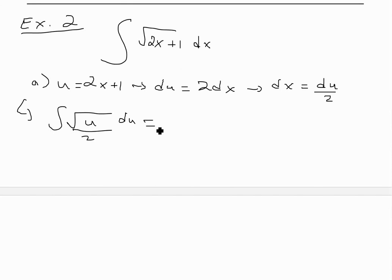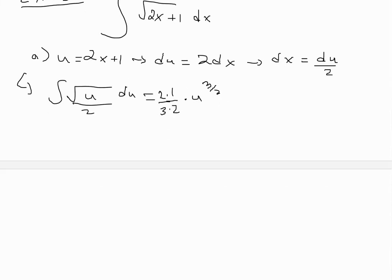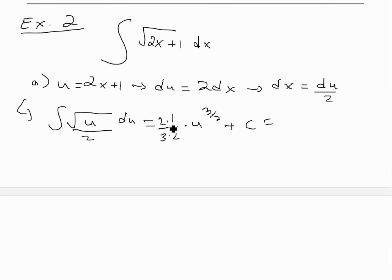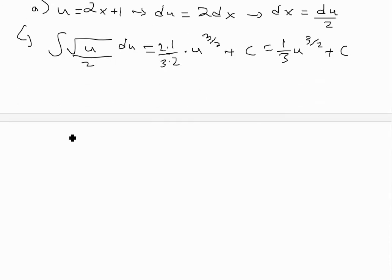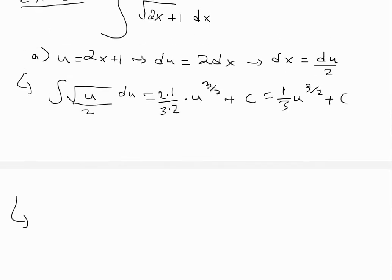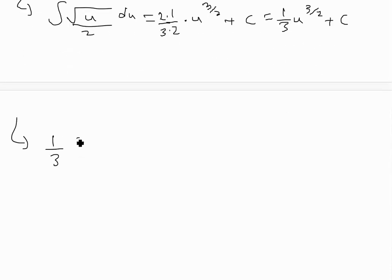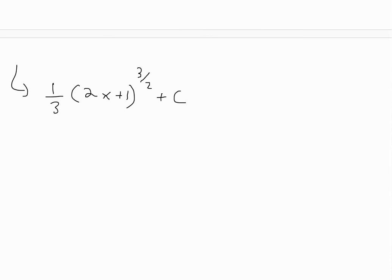Taking the integral, we have one-half times the antiderivative of square root of u, which is u to the 3 over 2, multiplied by 2 over 3 — the reciprocal of the power — plus C. Simplifying: the two-halves cancel, giving one-third u to the 3 over 2 plus C. Substituting back u equals 2x plus 1, our answer is one-third times the quantity 2x plus 1 to the 3 over 2, plus C.